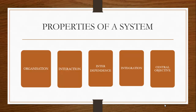Another property is a central objective. The objective of every system must be central — it must be clearly stated. Each component, unit, and department should be aware of the central objective of the organization, and each unit should work towards ensuring that central objective. By doing so, each unit will not work on its own towards achieving its own objective, but rather work for the central and overall good of the organization.